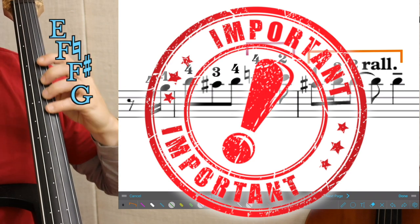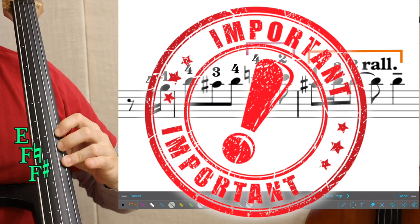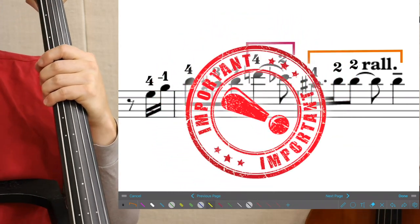One, two, three, four. Fourth position, E, F natural, F sharp, G. So if there was no fingering here,